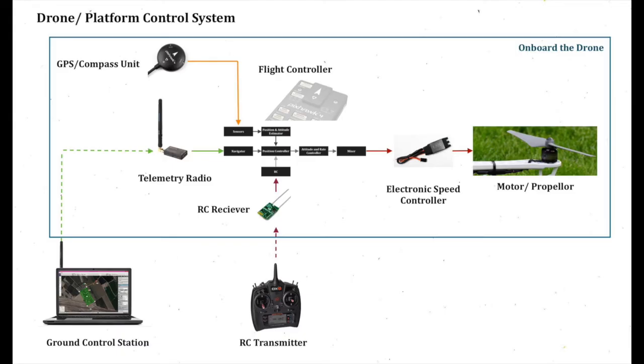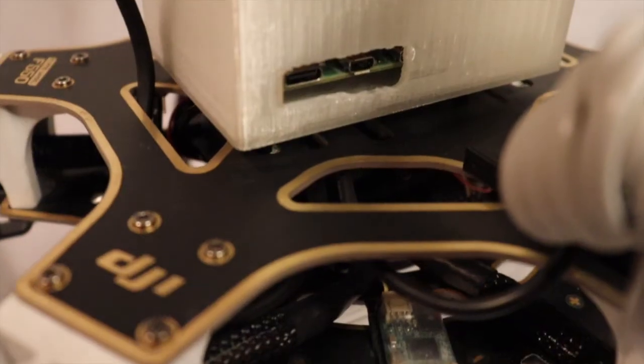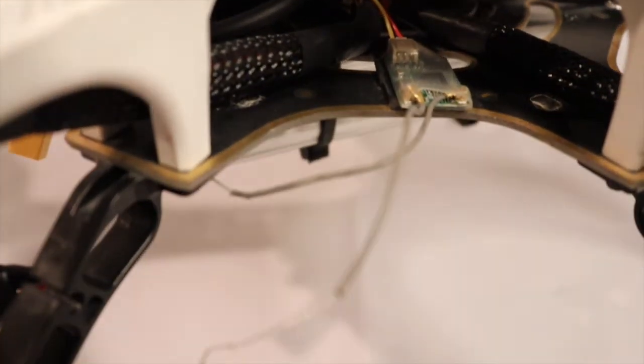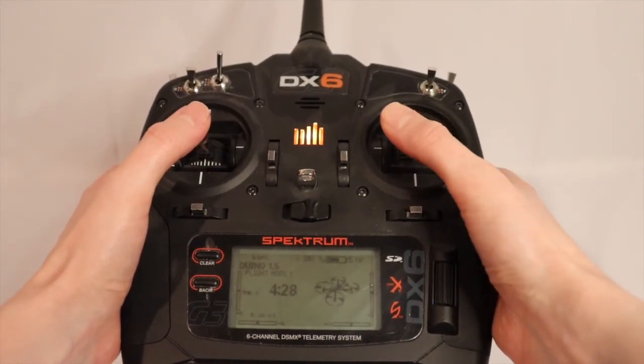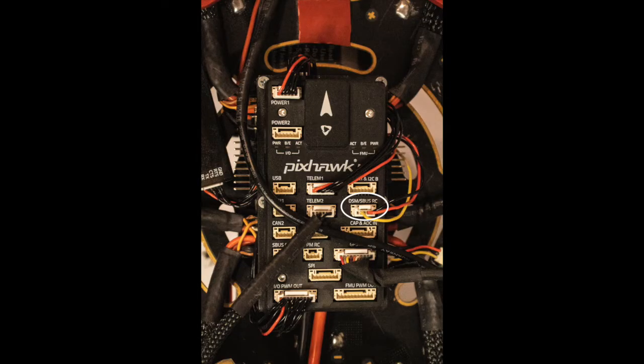The last key components on the drone are used for communication. A Spectrum RC receiver is used to receive manual inputs from the RC transmitter and relay the information to the flight controller.